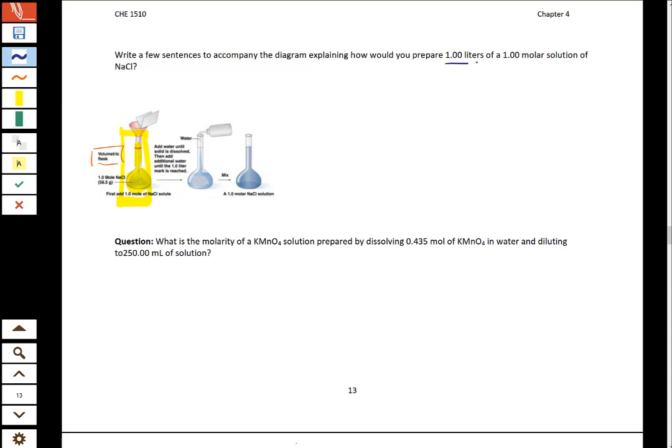So this is showing how you make a solution. It's asking you to describe how you would prepare one liter of a one molar solution of NaCl. So first what you would need to do is figure out how many grams are in one mole of NaCl. So there are 58.5 grams of NaCl in one mole of NaCl. So once you have that down, then what you do is you add this to the volumetric flask. So you've massed it and you add the solid first.